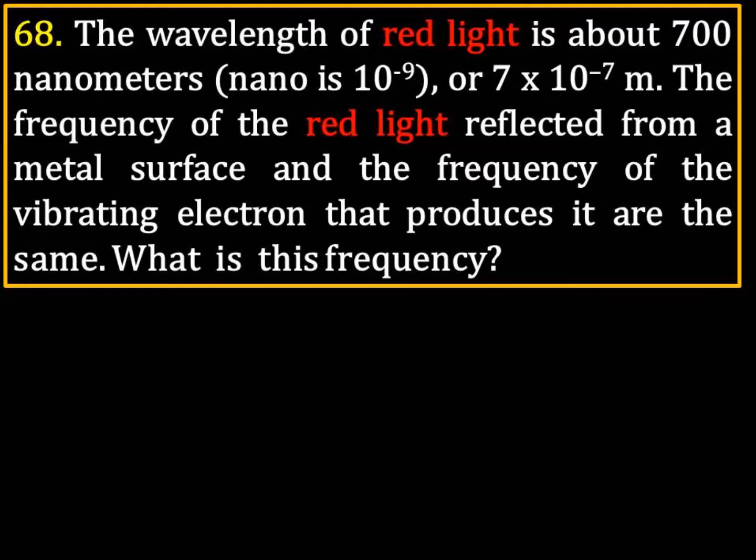The wavelength of red light is about 700 nanometers. Nano means billionth, or 10 to the negative 9. Or 700 nanometers would be 7 times 10 to the negative 7th meters.